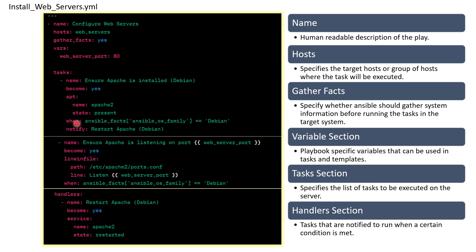Here we have also defined a condition: if the Ansible OS family is equal to Debian, then only this task should run. Once the task is completed, it should notify to restart Apache. Restart Apache is one of the handlers — for example, once HTTP services are installed, we also want to start Apache services. So we notify the handler, and once the task finishes, the tasks mentioned under handlers get executed. This is a slightly complex playbook but gives you an idea of how playbooks are going to look.